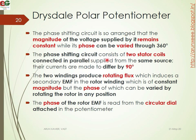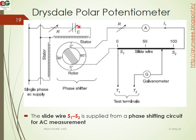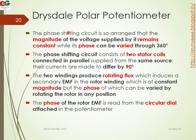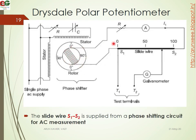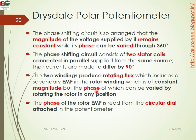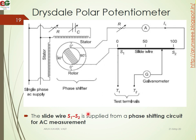The phase shifting circuit consists of two stator coils connected in parallel to the same source, where the currents are made to have a 90-degree phase difference. This produces a rotating flux in the windings. The rotor winding is stationary, and it develops an induced secondary EMF with constant magnitude but variable phase, which can be varied by rotating the rotor position. The phase of the EMF is read from the circular dial attached to the potentiometer.